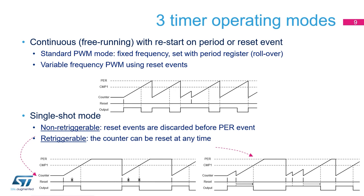The up-counters can operate in three modes. In continuous mode, also called free-running mode, the counter rolls over to zero when it exceeds the value programmed in the period register, or restarts counting if it is reset by an external event. This is the most common mode used for fixed-frequency converters or for externally synchronized variable-frequency converters.